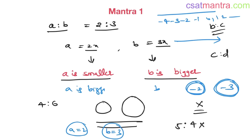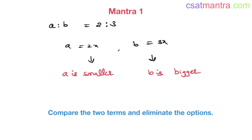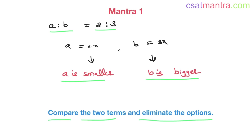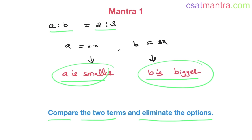That's the reason we take x as positive — it makes things simpler. First mantra: when a ratio is given, you will know which one is smaller and which one is bigger. In the options, compare the two terms and eliminate the options that don't satisfy 'first term smaller, second term bigger.' This is the first mantra — just by comparison you can eliminate a few options.